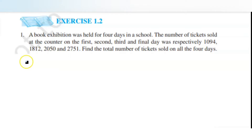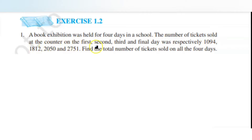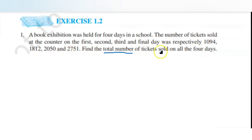Hello everyone. Let us see the first question in Exercise 1.2 from the NCRT book, 6th grade. The first word problem is: a book exhibition was held for four days in a school. The number of tickets sold at the counter on the first, second, third, and final day were respectively 1094, 1812, 2050, and 2751. Find the total number of tickets sold on all four days.